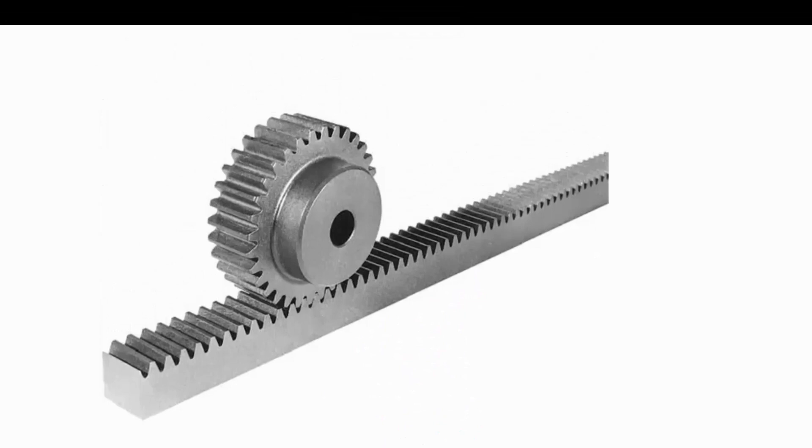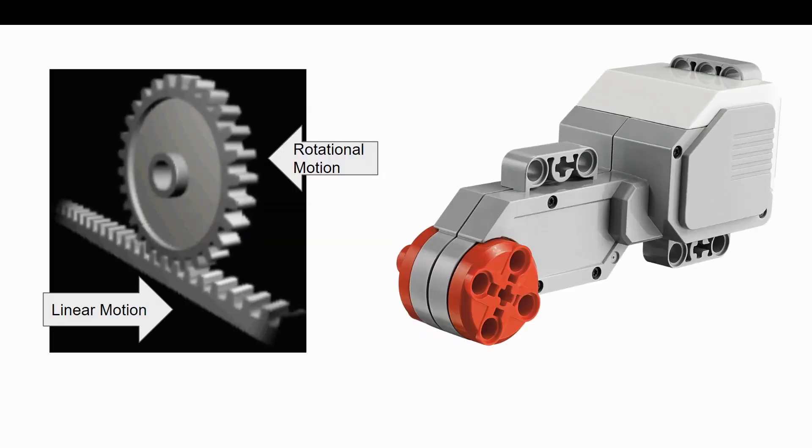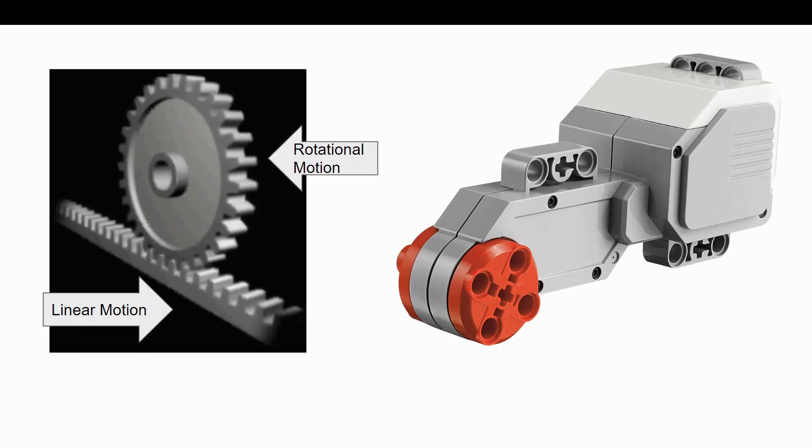Rack and pinions convert rotational motion to linear motion. Here's what I mean by that. A rack and pinion has two parts, a pinion and a rack. The pinion part is a gear whose teeth interlock with the teeth on the rack. So when the gear rotates, the rack moves forward and backward, aka linear motion.